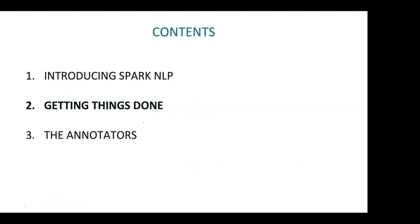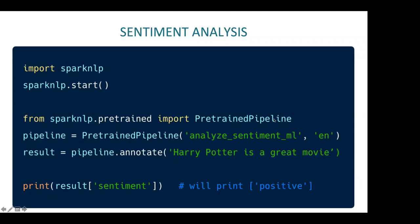Here's a simple example in Python for doing sentiment analysis. The goal is: what can you do with five lines of code? Import Spark NLP, call spark NLP.start() to initialize the library, import a pre-trained pipeline. Pipeline equals PretrainedPipeline, 'analyze_sentiment_ml', language 'en'. Then annotate 'Harry Potter is a great movie.' The result is a simple Python dictionary — print result sentiment, it will print 'positive'. That's all you need to do sentiment analysis with a pre-trained model.